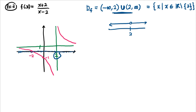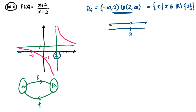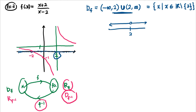To find the range, we use the concept of inverse functions. When we map x to f(x) using f, the reverse mapping uses f⁻¹. The range of f equals the domain of f⁻¹. So to find the range of f, we first find f⁻¹.